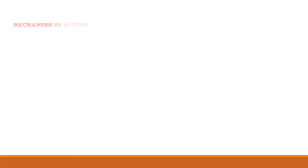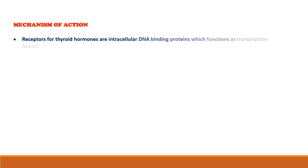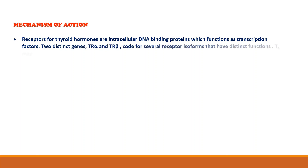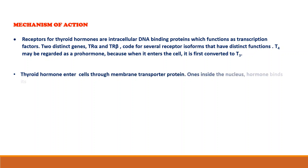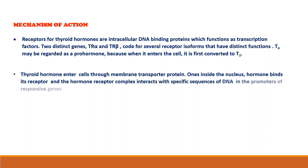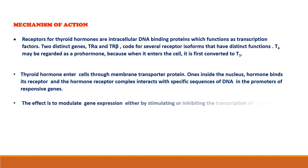So let's have a discussion about the mechanism of action of thyroid hormones. Receptors for thyroid hormones are intracellular DNA-binding proteins which function as transcription factors. Two distinct genes, TR-alpha and TR-beta, code for several receptor isoforms that have distinct functions. T4 may be regarded as a pro-hormone because when it enters the cell, it is first converted to T3. Thyroid hormone enters cells through membrane transport proteins. Once inside the nucleus, the hormone binds its receptor and the hormone-receptor complex interacts with specific sequences of DNA in the promoter of responsive genes. The effect is to modulate gene expression either by stimulating or inhibiting the transcription of specific genes.